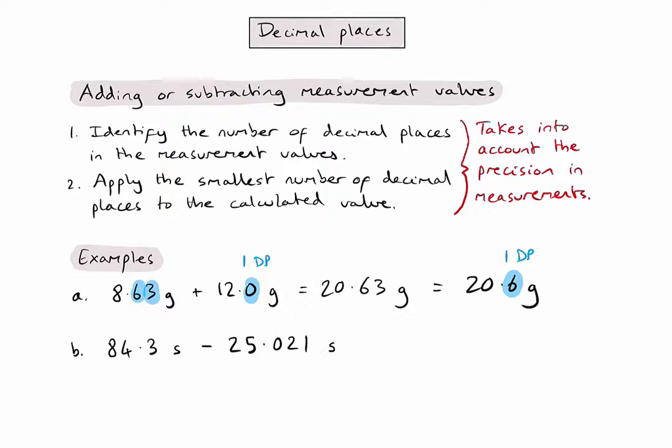In this second example, we have a subtraction calculation. So again, we need to consider the decimal places in those measurement values. In this case, the first value has just one decimal place and the second value actually has three decimal places. The smallest number of decimal places is one, so I need to give my final answer to one decimal place as well.